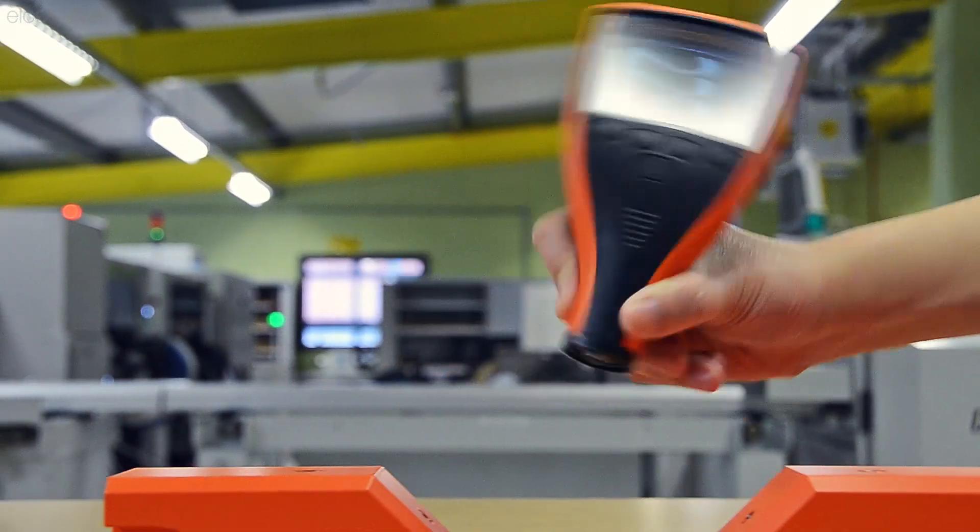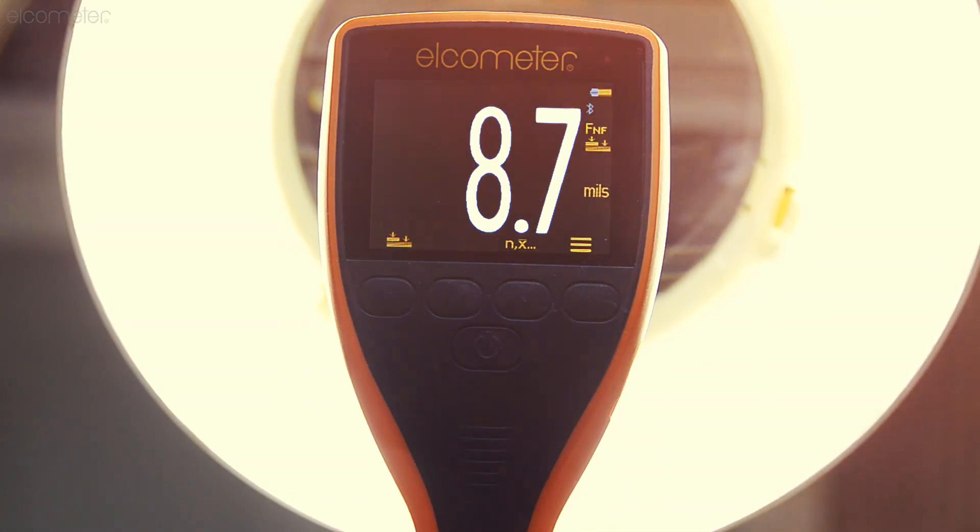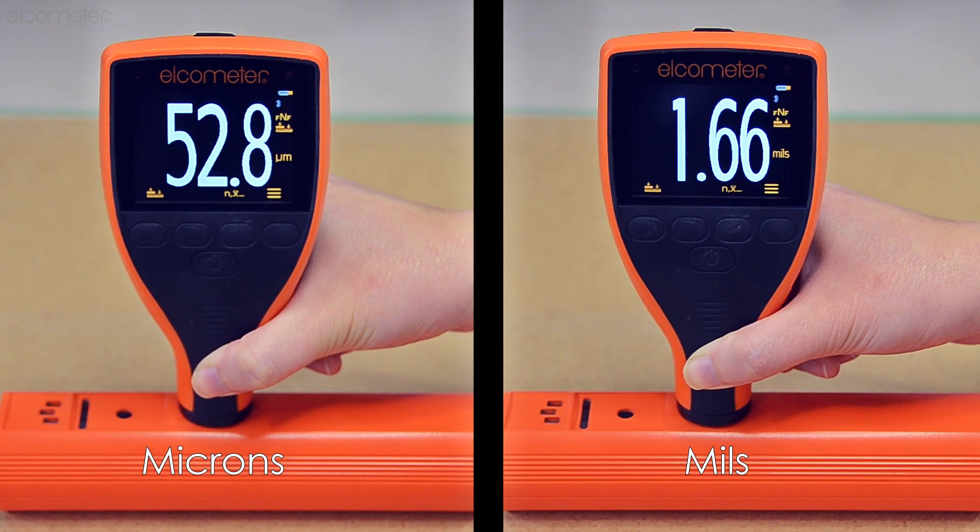With its clear, large colour display, auto-rotate and auto-brightness, the Elcometer 415 is easy to read whatever the conditions.